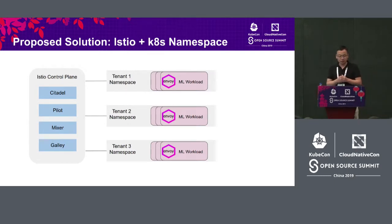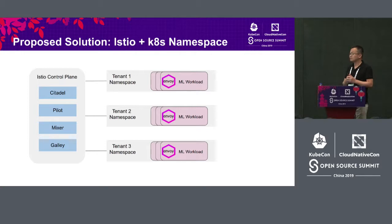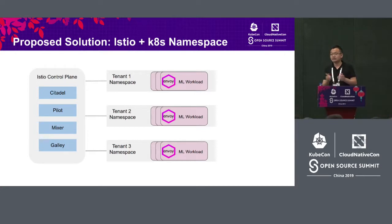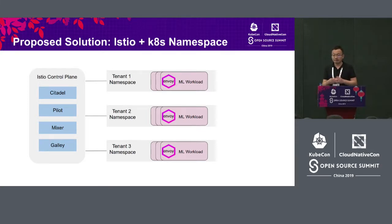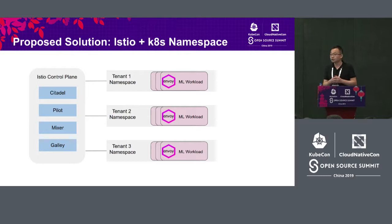Here is our proposed solution: Istio plus Kubernetes namespaces. Each tenant has its own dedicated namespace — they run their workloads on their own namespace. Kubernetes namespaces can be leveraged for resource and workload isolation. Istio auto-injects Envoy to each workload, and along with the Istio control plane, provides the security, traffic management, and observability needed to manage these machine learning workloads.